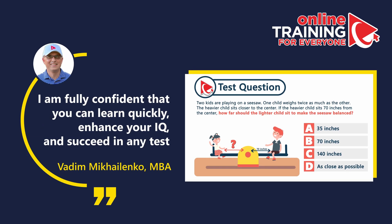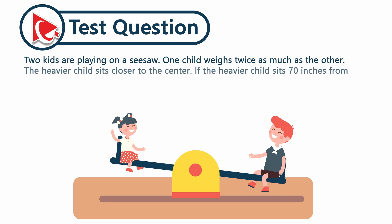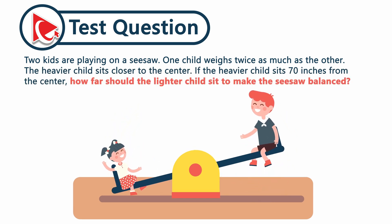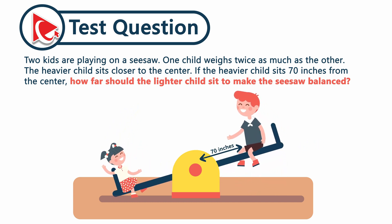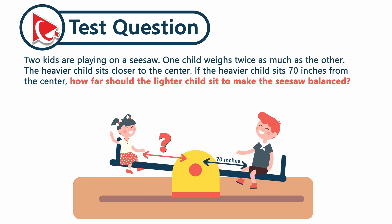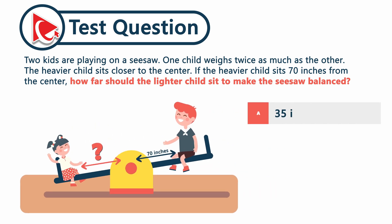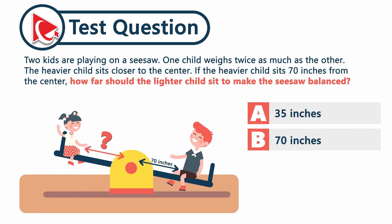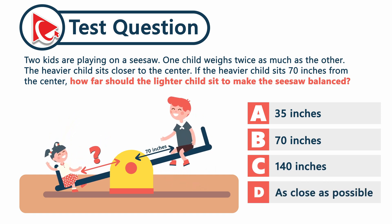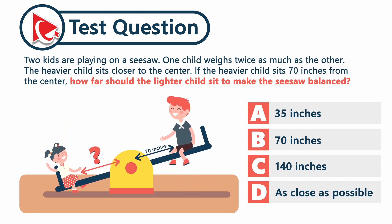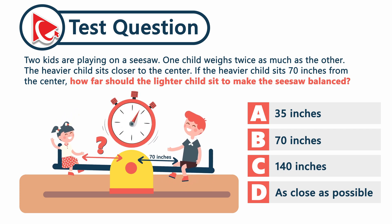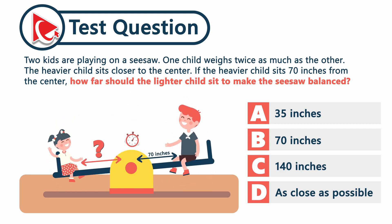Two kids are playing on a seesaw. One child weighs twice as much as the other. The heavier child sits closer to the center. If the heavier child sits 70 inches from the center, how far should the lighter child sit to balance the seesaw? Choices: A) 35 inches, B) 70 inches, C) 140 inches, D) as close as possible. A timer is set — lock in your answer before time's up.